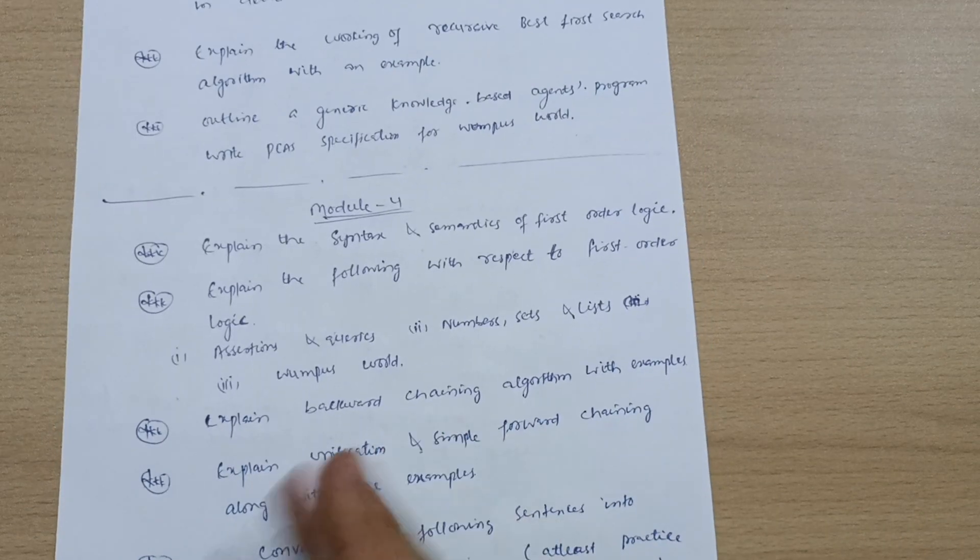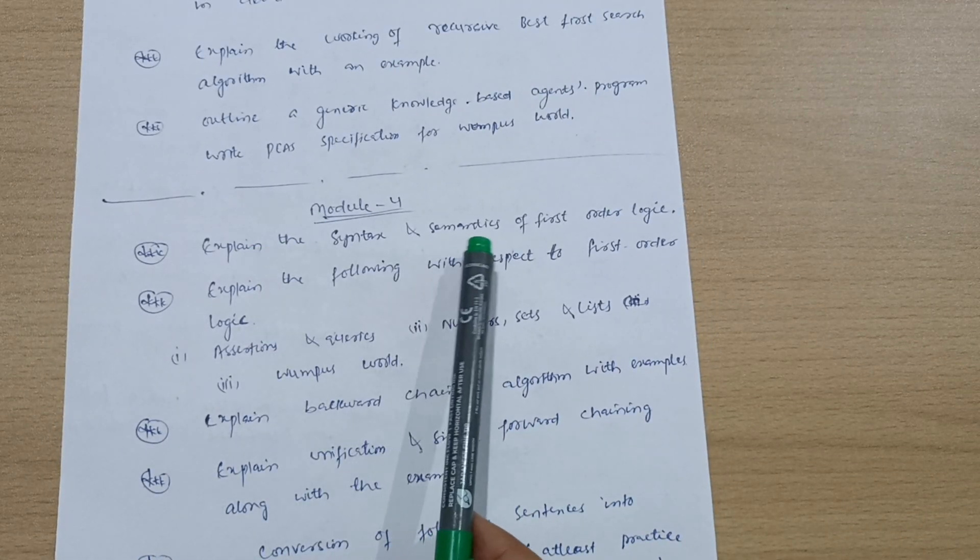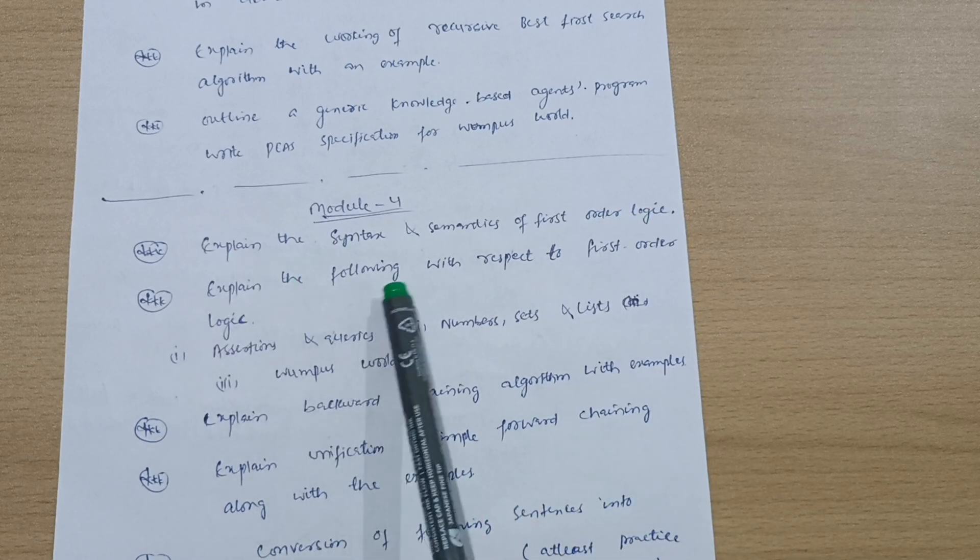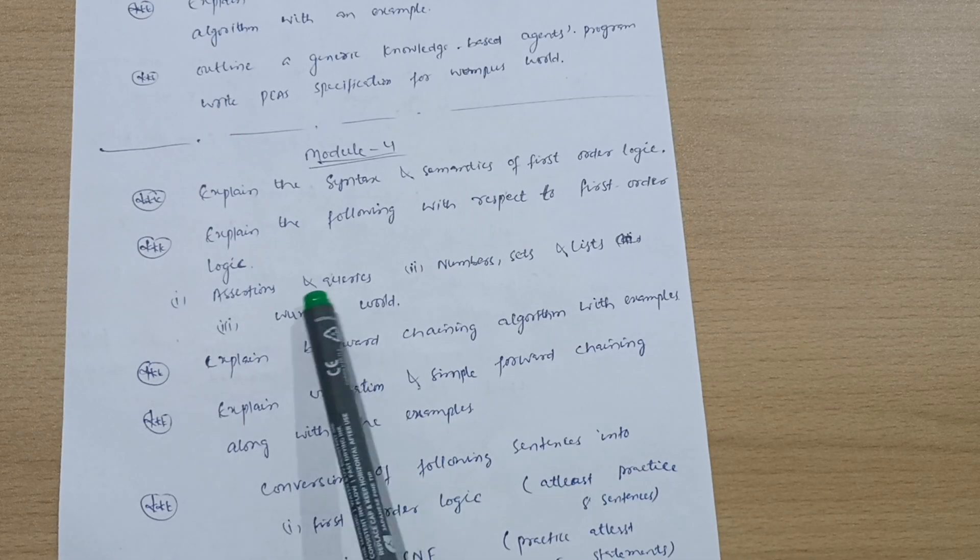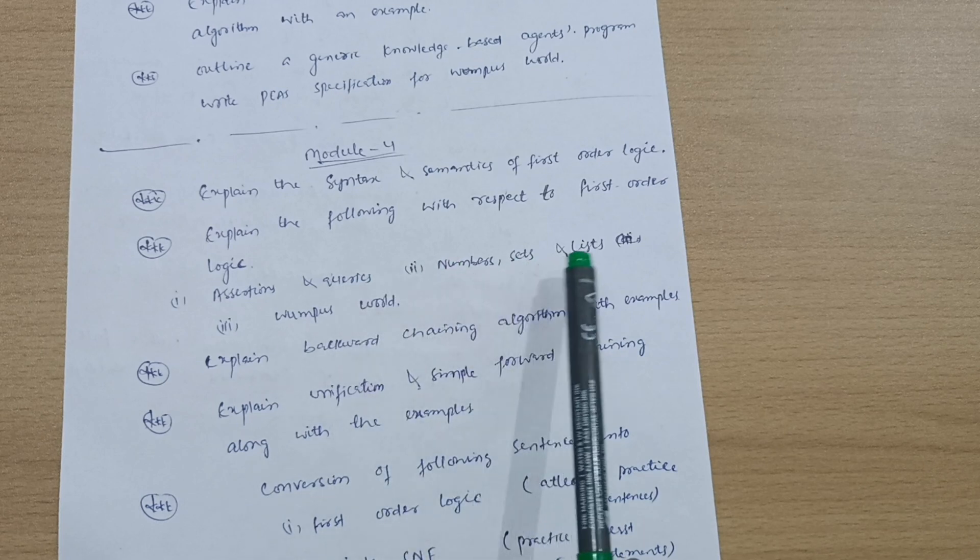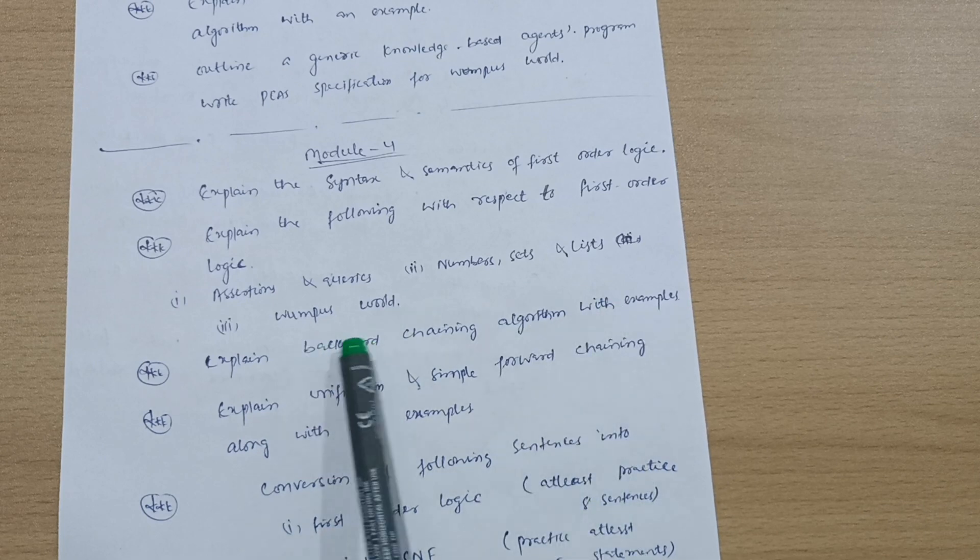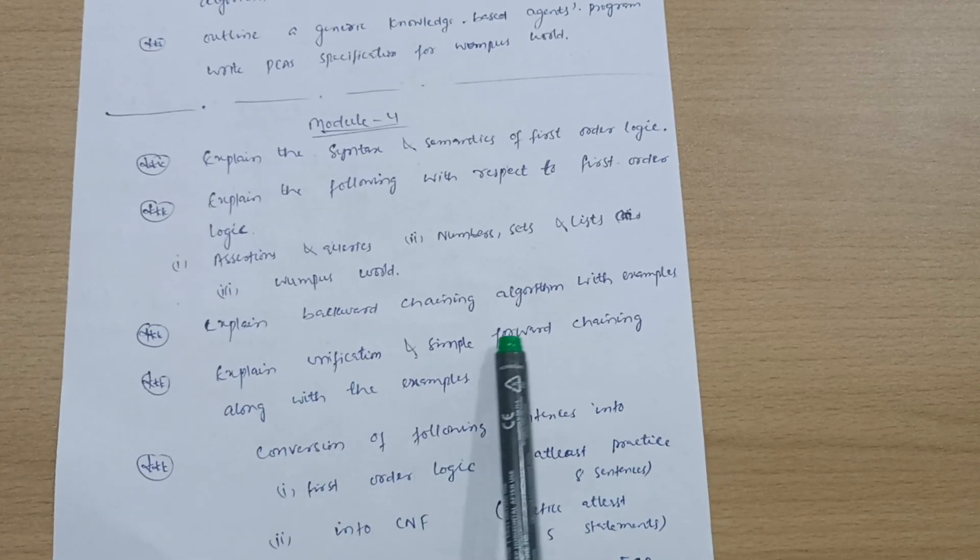Next is Module 4. Expand the syntax and semantics of first-order logic—it is super important question. Explain the following with respect to first-order logic: assertions and queries, numbers, sets and lists, and wumpus world. Expand backward chaining algorithm with examples. Sometimes they can also ask forward chaining algorithm. Explain unification and simple forward chaining along with examples.